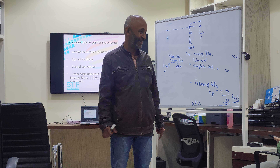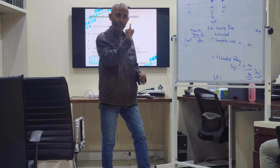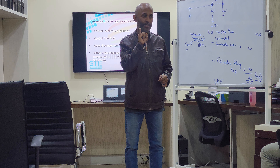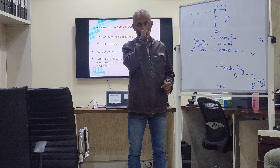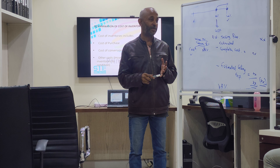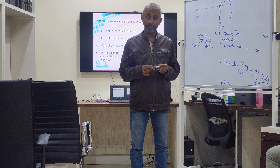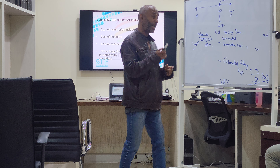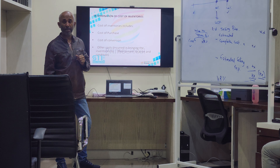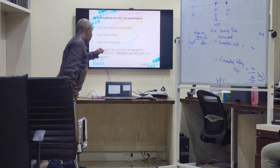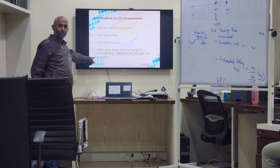Now machines are there — I am leaving that out. One element is labor. The other element of the conversion cost is overheads: electricity, water, depreciation of the machines — all these are to be factored in when arriving at the cost of the inventory.